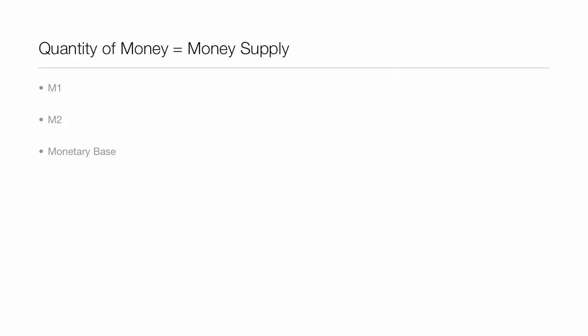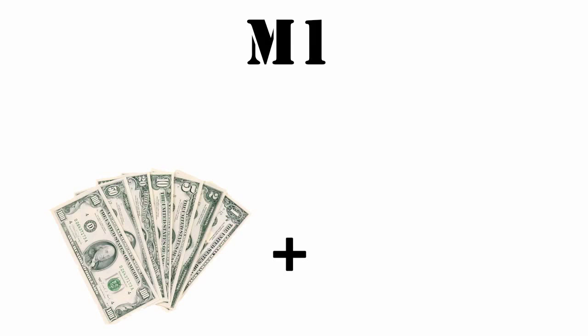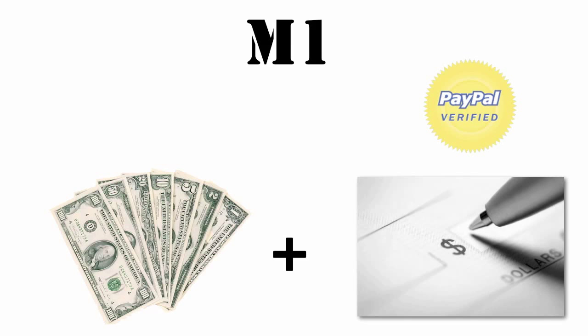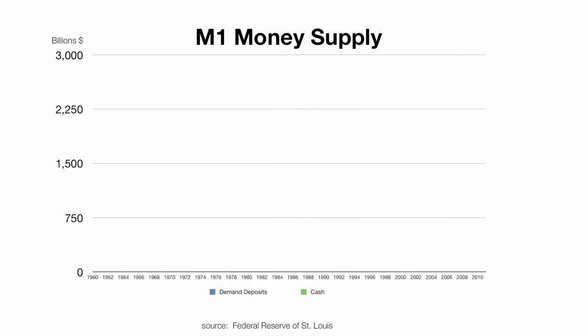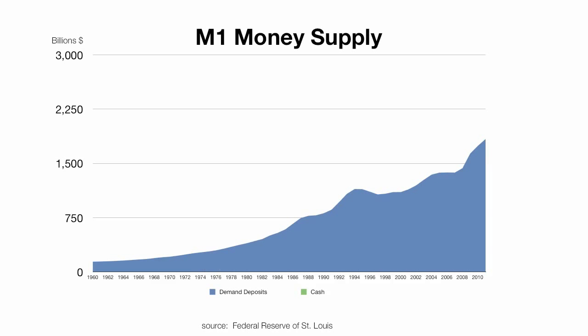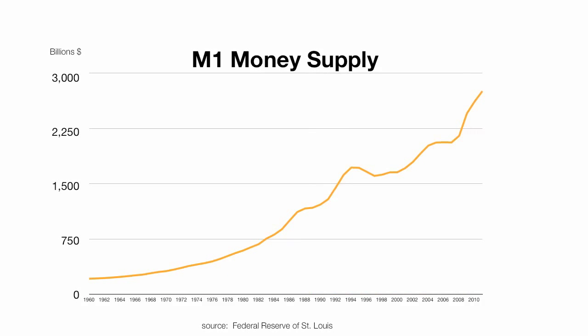Governments track the quantity of money — whether you're the United Kingdom, France, Italy, Japan, India, or China, everybody has their own money supply. In the United States we use M1 and M2 primarily. M1 is basically all the cash plus checking accounts plus demand deposits like PayPal — anywhere we can get money pretty easily. M1 has grown over time, as shown in this Federal Reserve of St. Louis chart: the blue is demand deposits, the green is cash on hand, and the orange line is both combined. It's grown substantially.